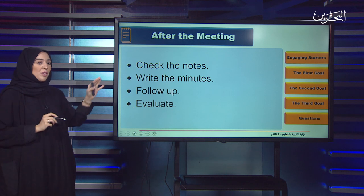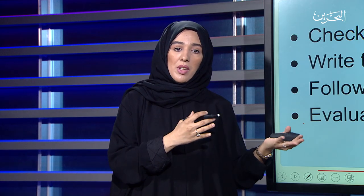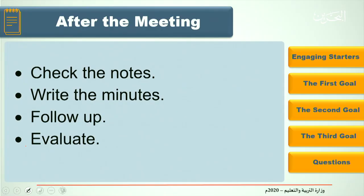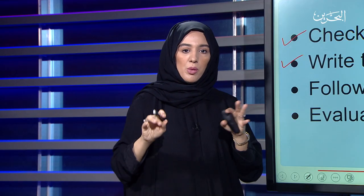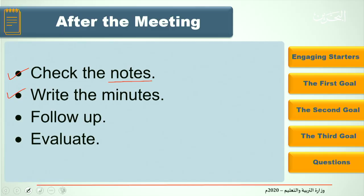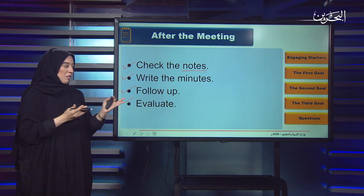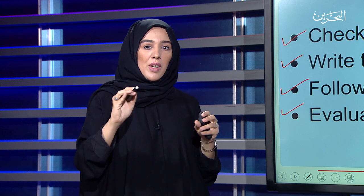After the meeting, the chairman and secretary check the notes — while the chairman was discussing with members, the secretary was sitting next to him writing down what was said. After that, they write the minutes and distribute them to the participants. Third, follow-up — the chairman follows up with participants regarding any actions taken. Finally, they evaluate the meeting; some companies send a form for participants to evaluate the meeting.